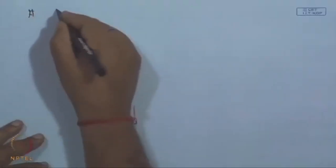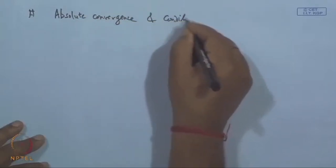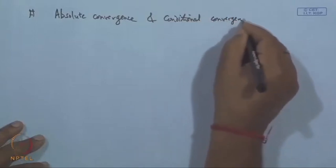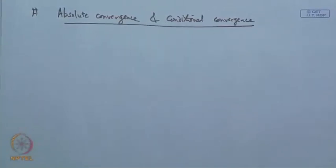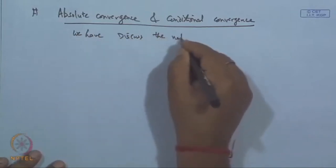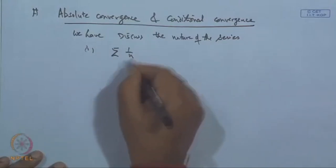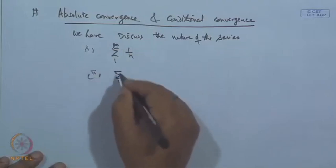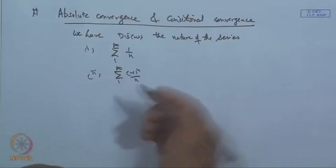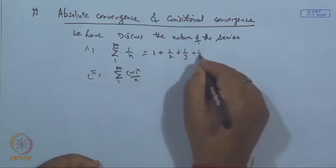These tests are very important because they give immediately the nature of the series without computing the sum, since sometimes we are only interested in whether the series converges or diverges, not in finding the exact sum. There are a few more tests which we will discuss after the concept of absolute and conditional convergence.